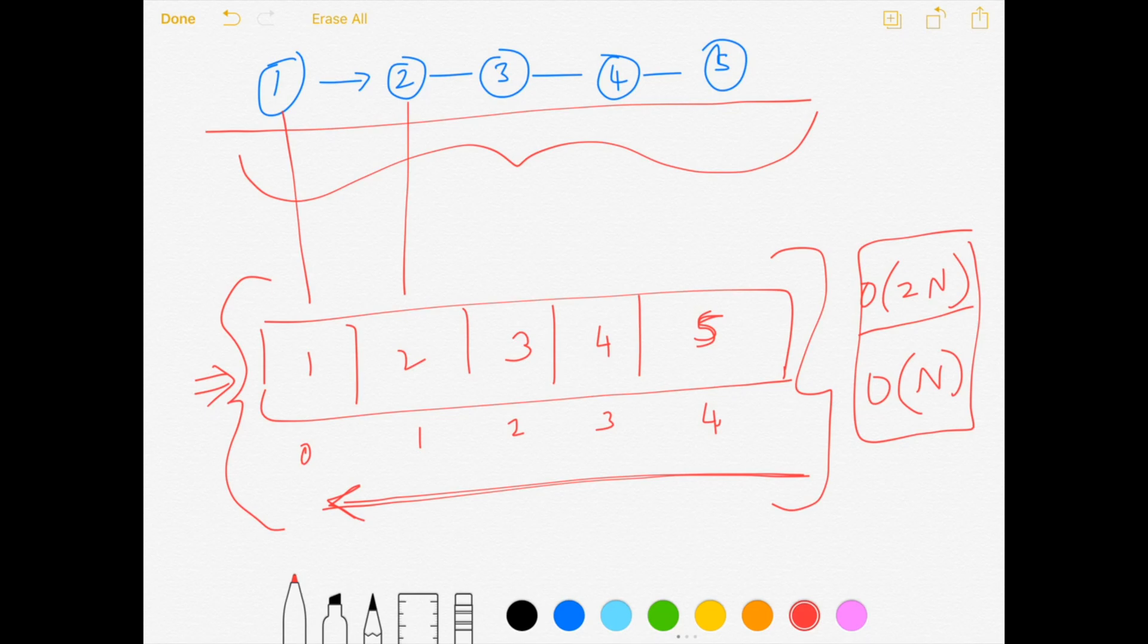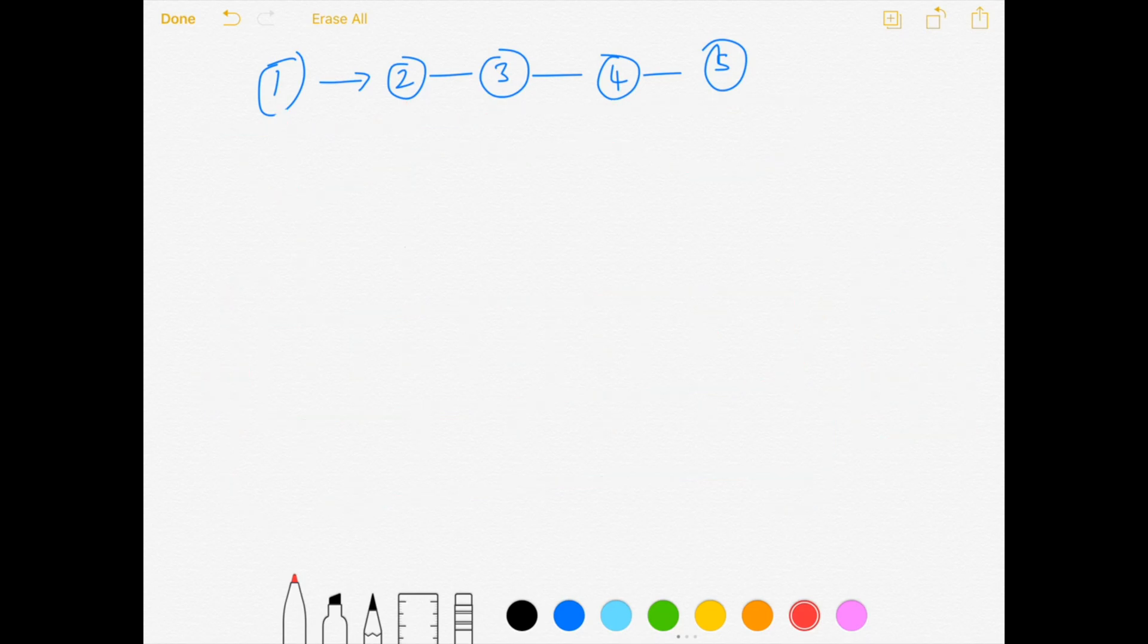Now let's think about how we can optimize this solution. What if I tell you that we can solve this problem in one iteration while we are going from one all the way to five and simultaneously build the result in the reverse order.